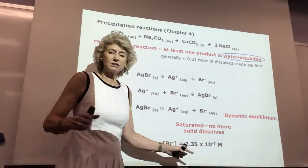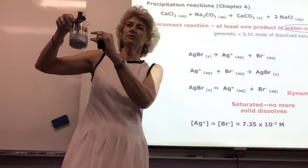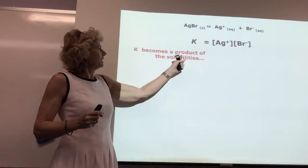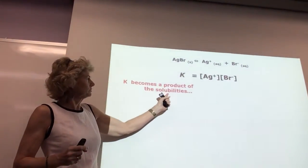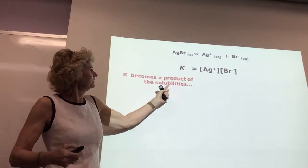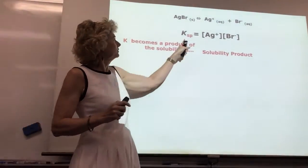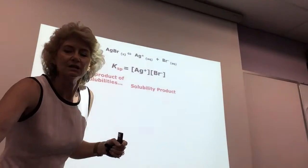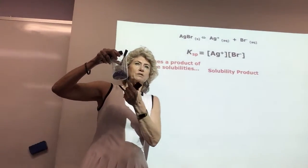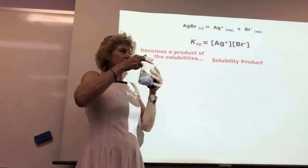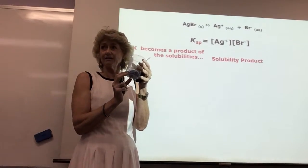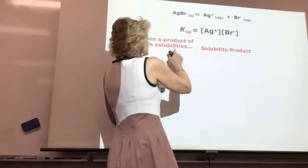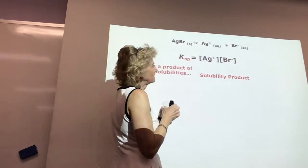This is just the product of what we call the solubilities. The molar concentration that is constant over the solid is called the solubility — it's in moles per liter. When you multiply those concentrations together, that's called the solubility product. We give it its own subscript Ksp. This literally means the product of the concentrations of the ions over the precipitate. We don't care about how much precipitate there is because it's in huge excess compared to the concentration of the ions above it.